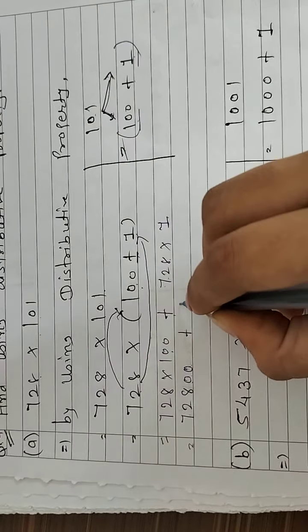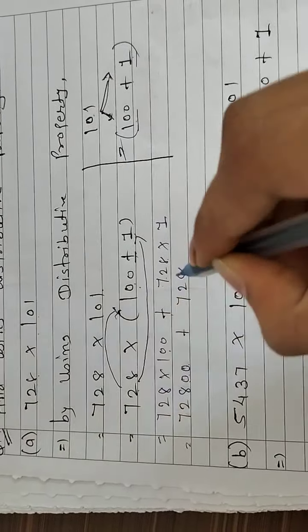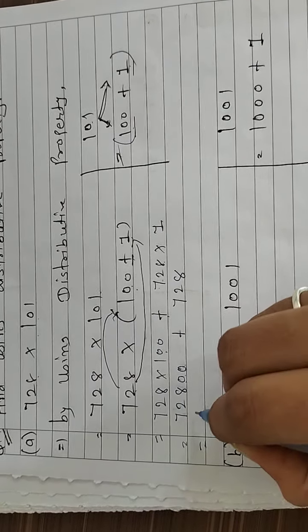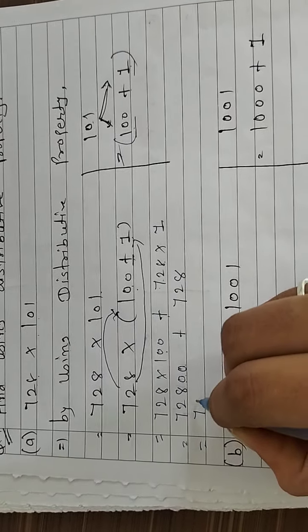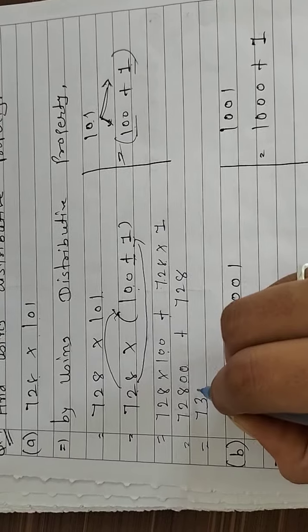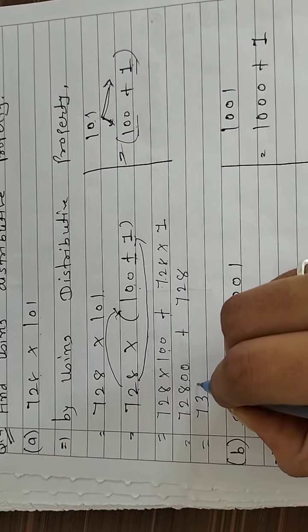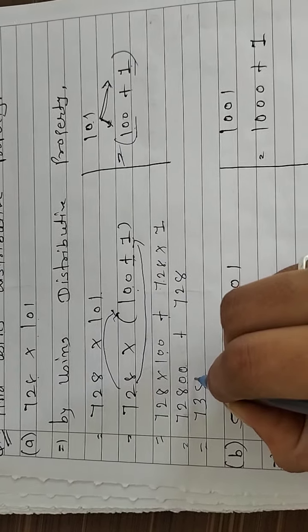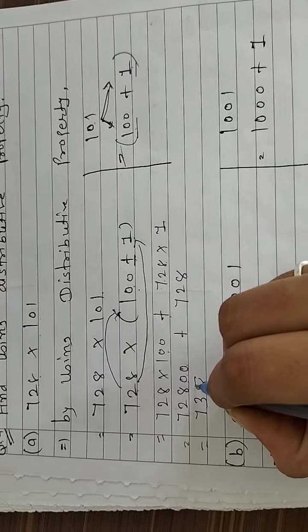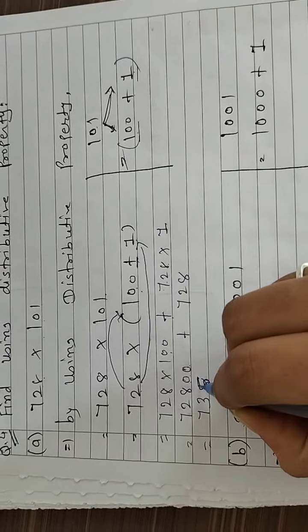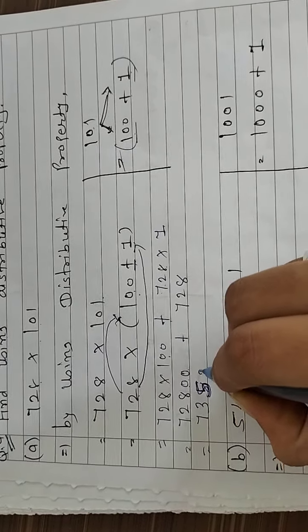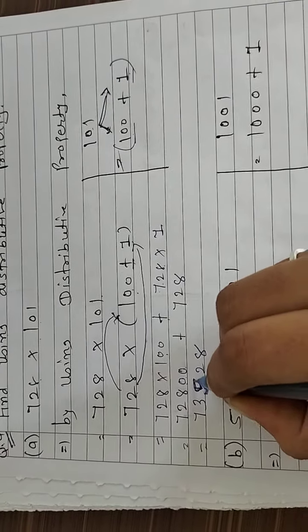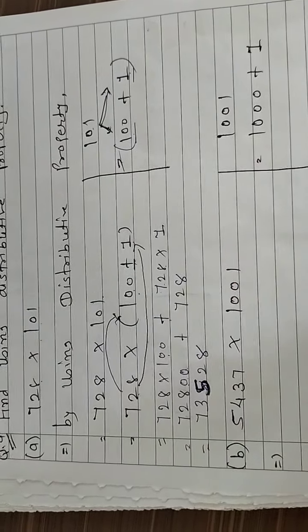728 का 1 से multiplication क्या होगा — वो खुद नंबर ही आ जाएगा। दोनों का addition करेंगे तो 73,528 हो जाएगा।